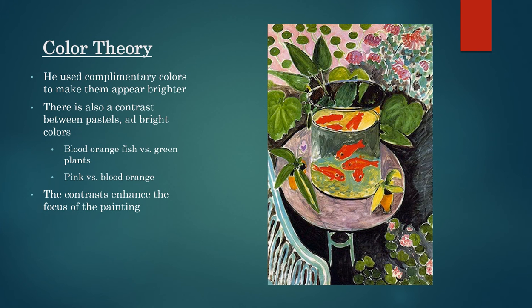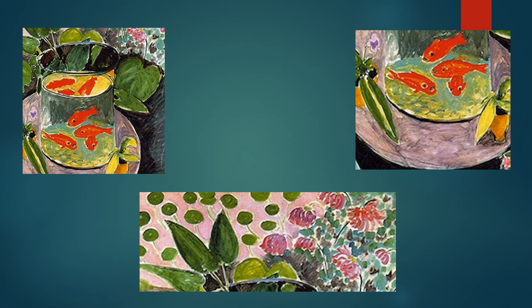Color was very important for not only this painting but all of his work as well. In Goldfish we see a striking contrast of complementary colors like greens and reds. He also creates the fish using a bright blood orange, which was a favorite of his, in pastel pink. Using these colors made them stand out more and shows the energy that the fish convey while swimming.